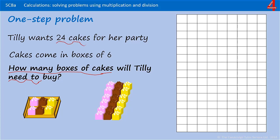That's 24 cakes altogether and they come in boxes of six. We need to do a division: 24 divided by 6. If you remember your multiplication facts up to 12 times 12, you'll be able to work out quite quickly that that's four. That means that Tilly will need to buy four boxes of cakes.